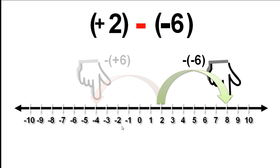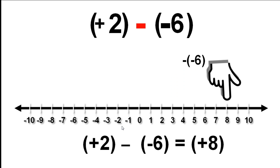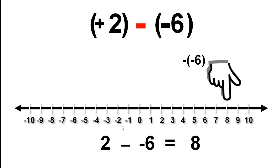This is what subtracting negative 6 looks like. We can now read off our answer from the number line: positive 8. Again, this isn't how we would normally write the calculation, so let's take out the brackets and the positive signs inside the brackets. This is how we would write the final calculation.